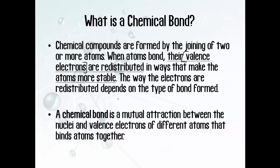Ionic, covalent, and metallic all do different things with their valence electrons. When they rearrange those electrons and become more stable, a chemical bond is formed — that is some sort of mutual attraction between the nuclei and valence electrons of different atoms, and that attraction binds them together. A key concept you probably learned in junior high is that opposites attract: positive and negative charges attract each other. Technically, this rule is called Coulomb's Law.